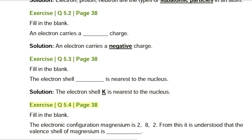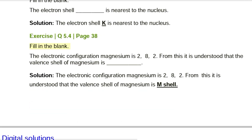Exercise Q5.4, page 38. Fill in the blank: The electronic configuration of magnesium is 2, 8, 2. From this it is understood that the valence shell of magnesium is _______. Solution: The electronic configuration of magnesium is 2, 8, 2. From this it is understood that the valence shell of magnesium is the M-shell.